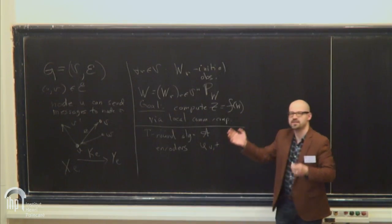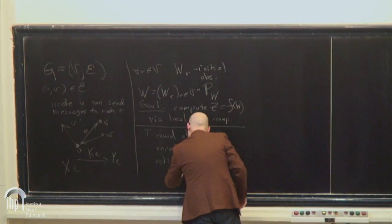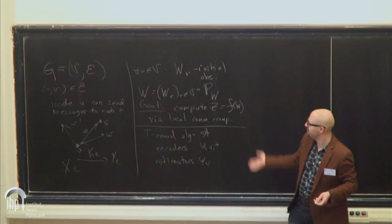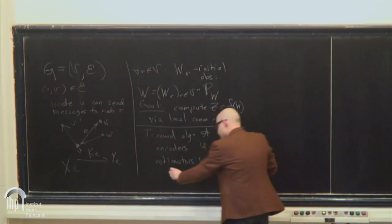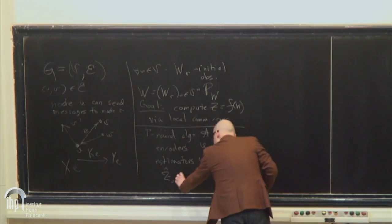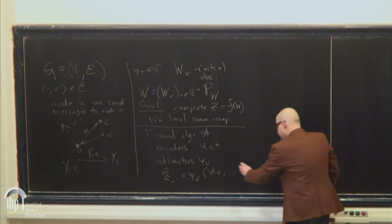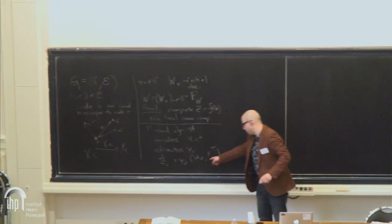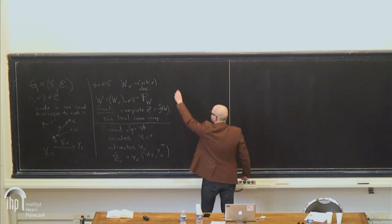Each node V at each time T decides what to send to all of its neighbors. At the end of T rounds, each node computes its own estimate Z-hat_V. This estimate is a function of that node's initial observation and Y_{V,T}, which is the T-tuple of all messages received by node V in T rounds.